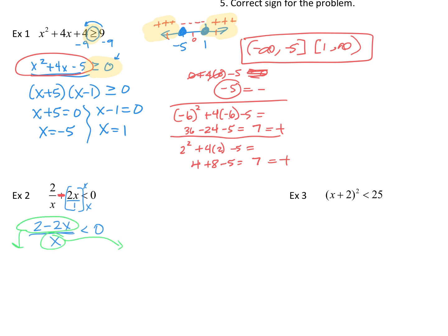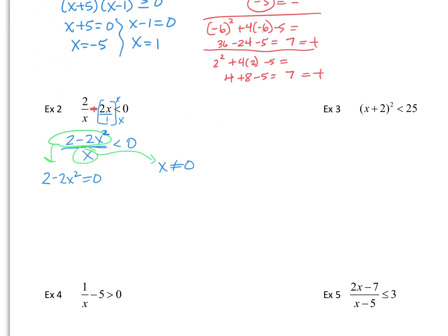I'm going to take that numerator — it's 2 minus 2x squared — and set it equal to 0. The denominator cannot equal 0 because you cannot divide by 0. Solving: negative 2x squared equals negative 2, divide by negative 2, so x squared equals 1. Taking the square root of both sides, x could be plus or minus 1. And x cannot be 0. So now it's number line time.